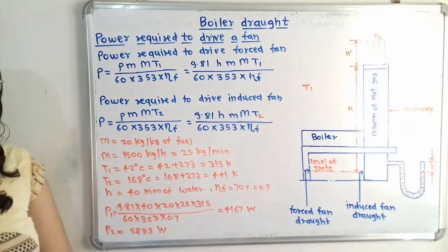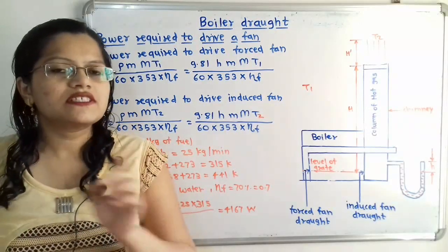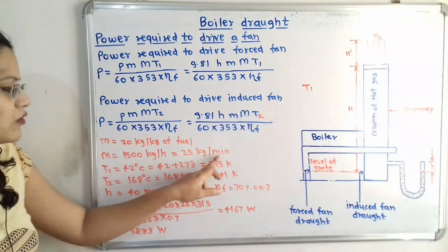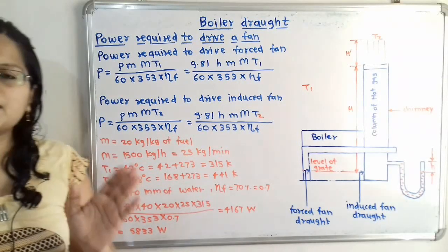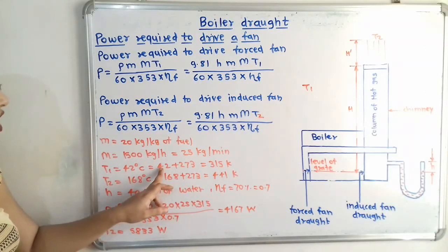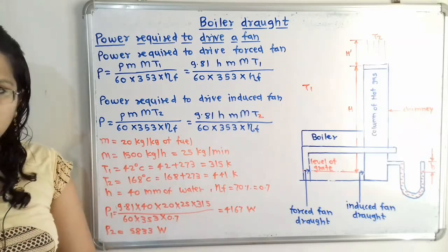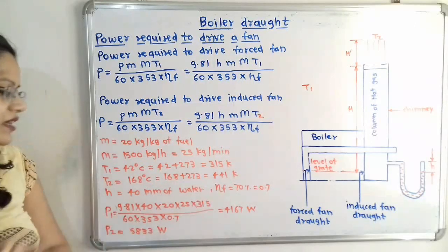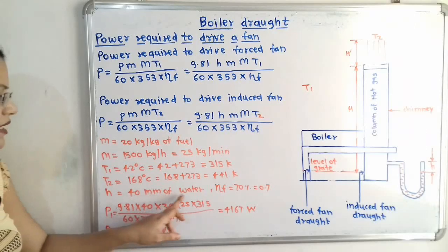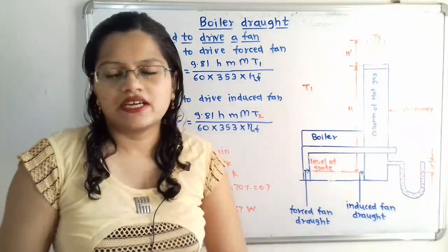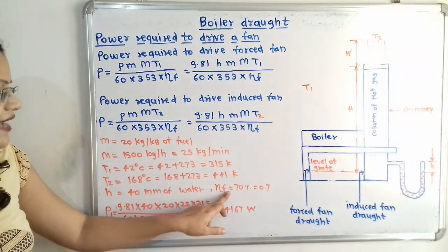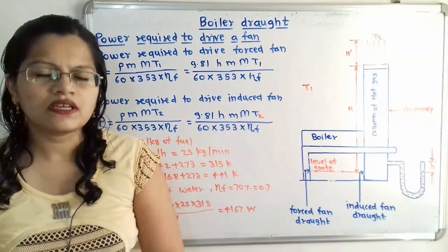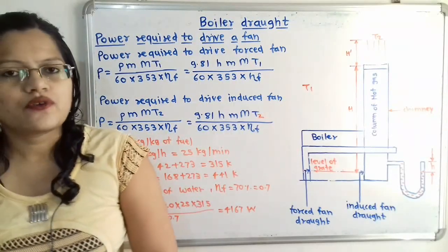Converting units: M = 1500/60 = 25 kg/min. T1 = 42 + 273 = 315 K. Temperature of chimney flue gas T2 = 168 + 273 = 441 K. h = 40 mm of water. Fan efficiency η_f = 70/100 = 0.7.